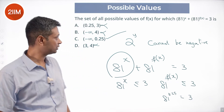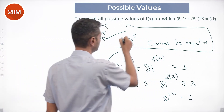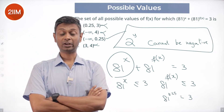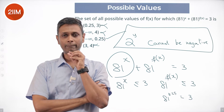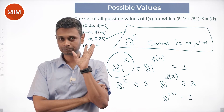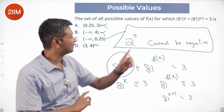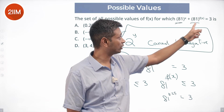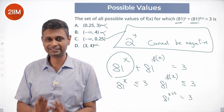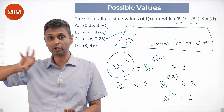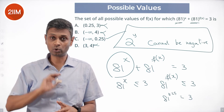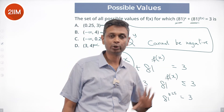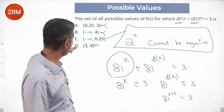The key point here: 2 power y cannot be negative, 10 power y cannot be negative, 11 power y cannot be negative — a positive number raised to any power cannot be negative. Very simple, very powerful fundamental. So this term cannot be negative, and it is less than 3 — strictly less than 3, not equal to 3. Only minus infinity would give 0, so if 81 power f of x is less than 3, then f of x is less than 0.25 — it cannot go above 0.25.